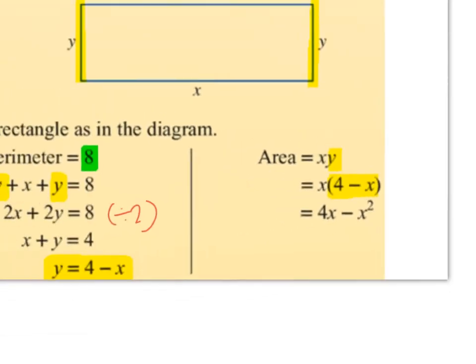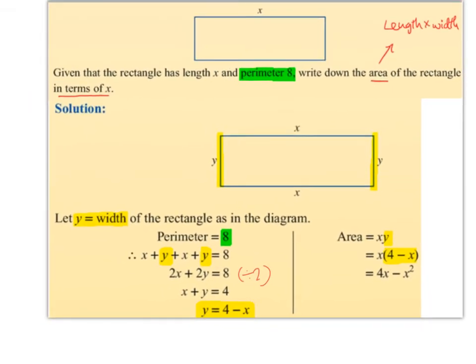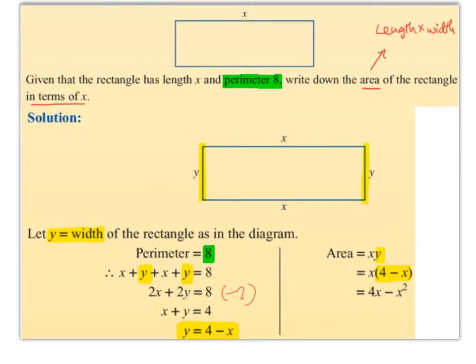When you're doing this question, it doesn't matter what you call y — what you call the width. You can call the width a, b, c, z — it doesn't matter. Any letter will do, so long as it's not x, because we know that the length is already x. And no matter what letter you call it, you will still end up with 4x minus x squared.